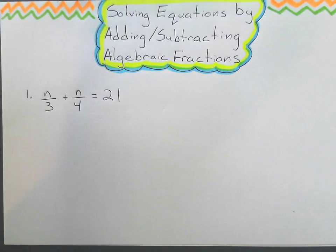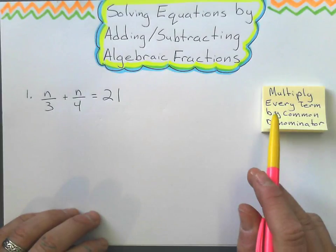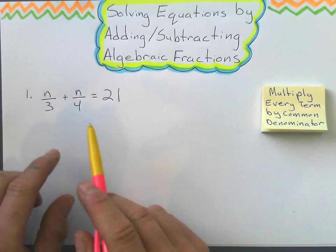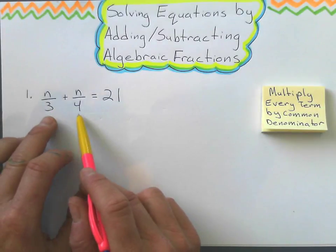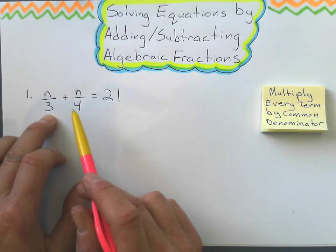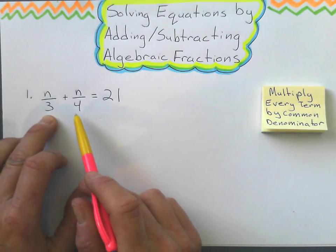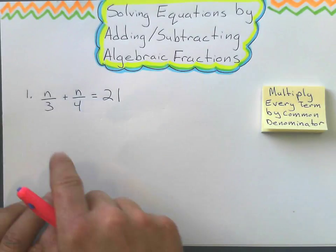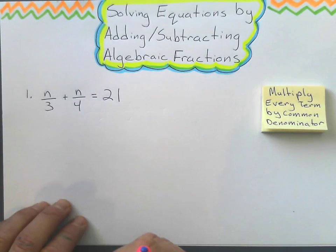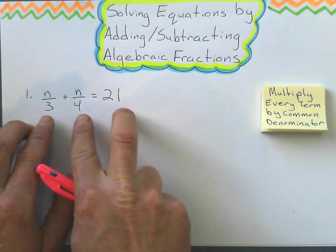Okay, so our first example here, with all of these, what we're going to do with each problem is we're going to multiply every term by the common denominator. So in this case, I've got 3 and 4 as my denominators, and my common denominator is the first multiple that they have in common. And the first multiple that 3 and 4 have in common is 12. So I'm going to multiply everything by that 12, and then I'll simplify it.